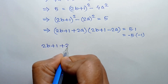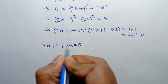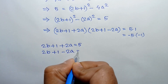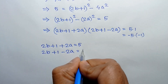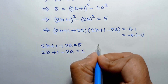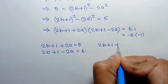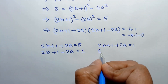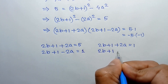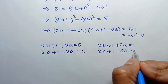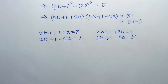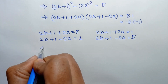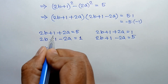For the first case comparing both sides we can write 2b+1+2a = 5 and 2b+1−2a = 1. Adding these two equations: 4b + 2 = 6.